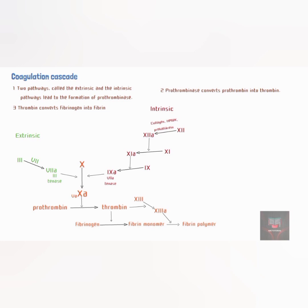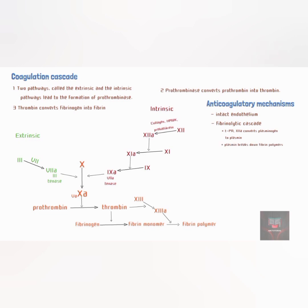Once a clot has been formed, there are a number of mechanisms in place to ensure there is no excessive formation of clots. The first is the intact endothelium, which ensures the clot is only formed at the site of vascular injury where the subendothelial collagen has been exposed. The second is the fibrinolytic system, which occurs when tissue plasminogen activator (tPA) and activated Factor XII convert plasminogen to plasmin. This plasmin then breaks down the fibrin polymer.